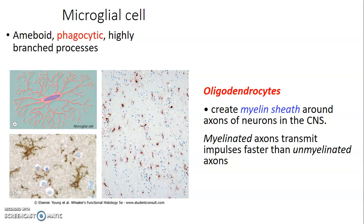Oligodendrocytes are cells that produce myelin sheath in the CNS. They wrap their cell membrane around axons or neurons to form myelin sheath, which insulates the axon so that impulses are not lost, thereby increasing the rate of impulse transmission compared to unmyelinated fibers.